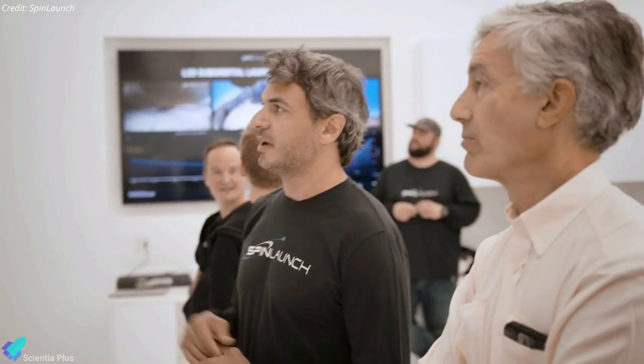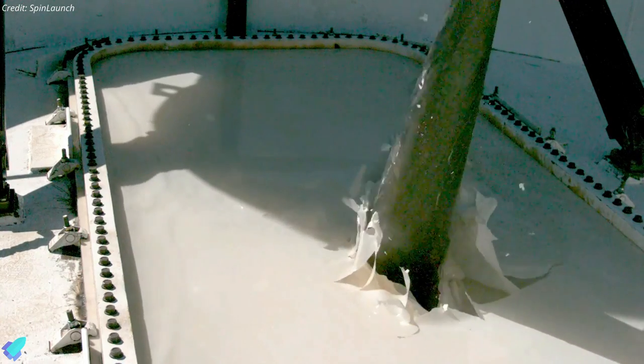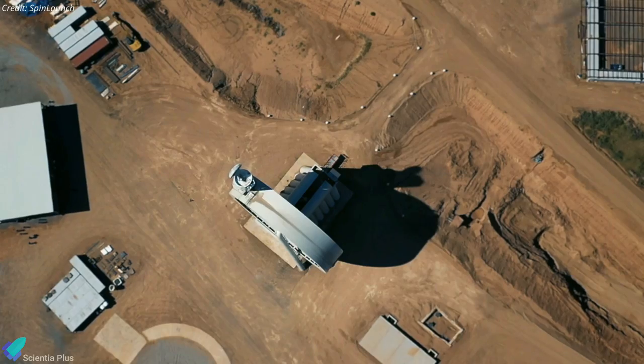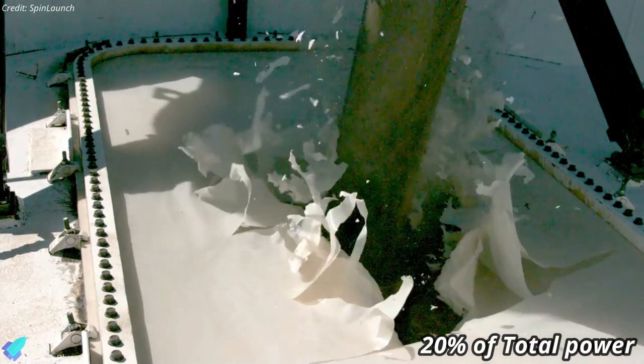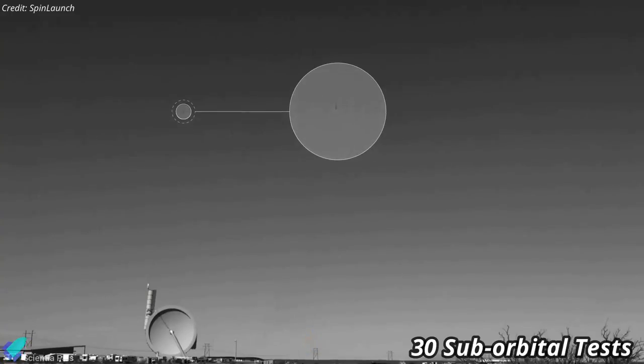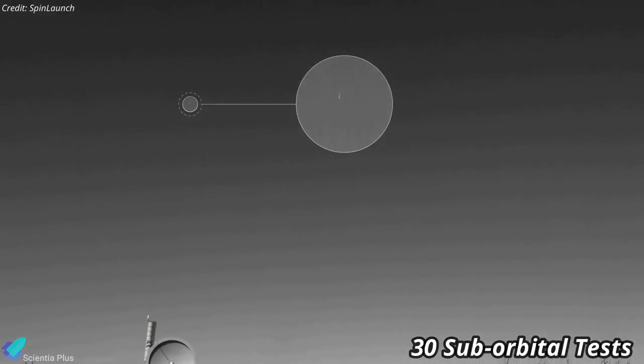According to Spin Launch, by starting small, they will be able to validate aerodynamic models and then scale up. The first kinetic launch only used about 20% of the system's total power, and the company is planning a series of 30 suborbital tests over the next six months.